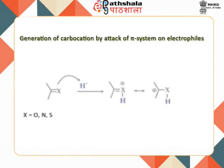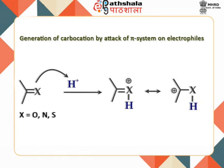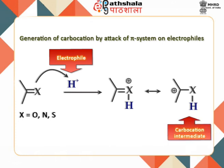When an electrophile adds to one of the atoms of a pi system, the adjacent atom acquires a positive charge. In case the positive atom is a carbon, a carbocation is formed. For example, attack of an alkene on an electrophile like a proton results in development of positive charge on the adjacent carbon atom to give a carbocation intermediate.